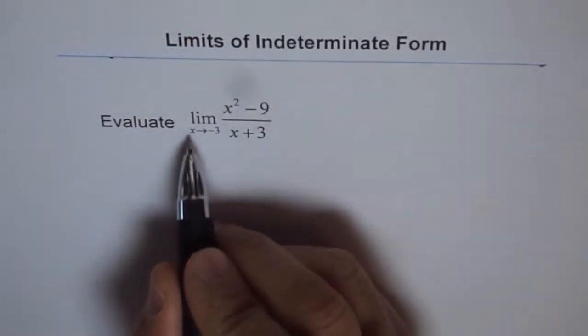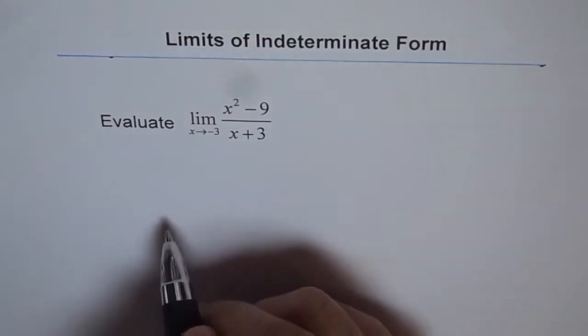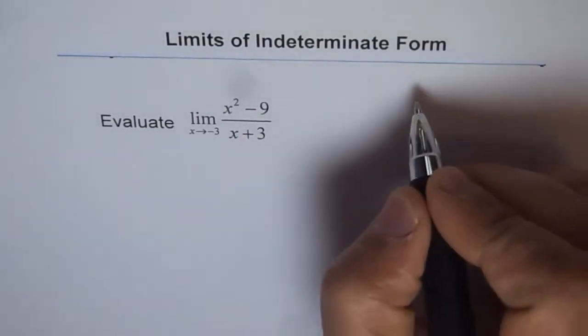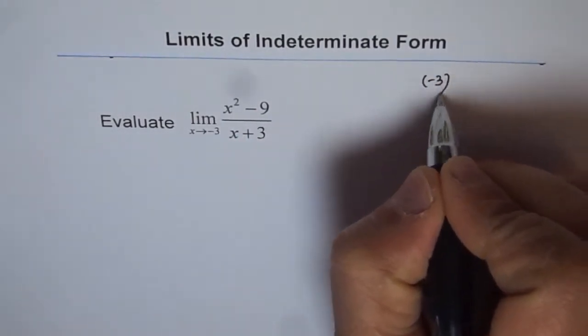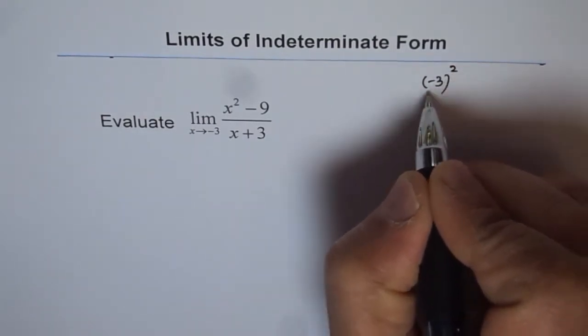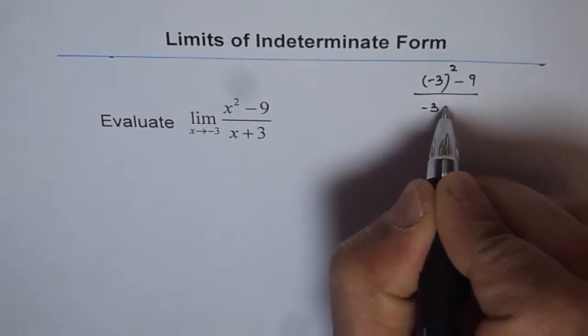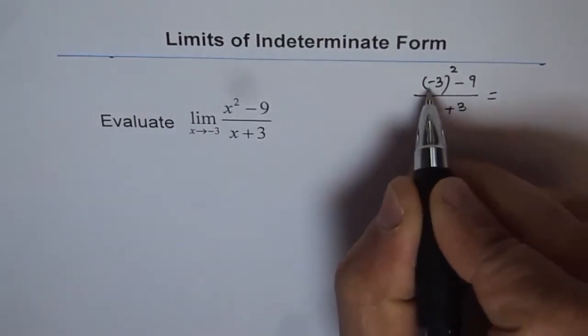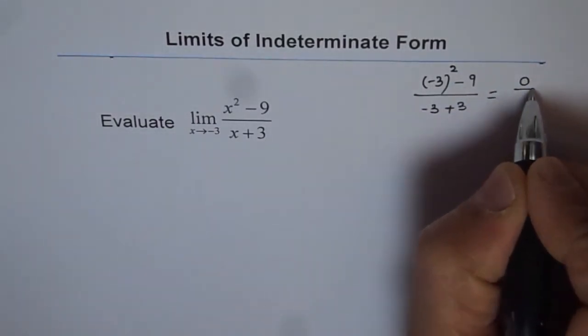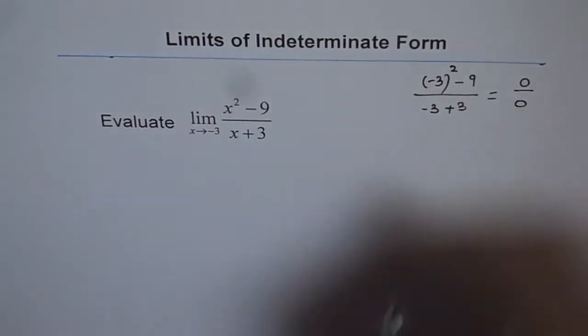So let's first substitute x equals minus 3 and see what we get. If I write x as minus 3 in the numerator, I get minus 3 squared minus 9 over minus 3 plus 3. That is 9 minus 9 which is 0, and minus 3 plus 3 is also 0.